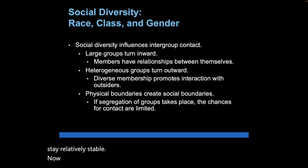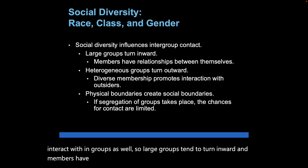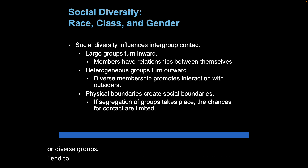Social diversity influences how groups interact. Large groups tend to turn inward, with members having relationships mainly among themselves. Heterogeneous or diverse groups tend to turn outward. Physical boundaries can also create social boundaries.